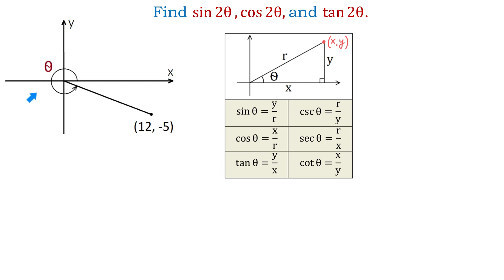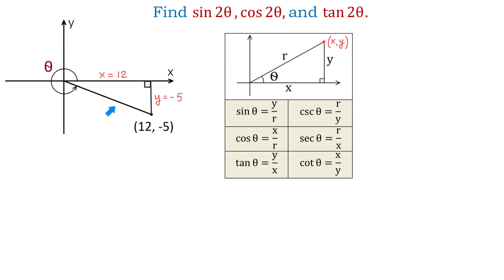In our problem, we have angle theta whose terminal side lies in quadrant 4. If from the given point we draw a perpendicular up to the x-axis, we will form a right triangle. And because we are in quadrant 4, x is positive, so x is 12, y is negative, so y is negative 5. To find the hypotenuse, we will use the Pythagorean theorem.